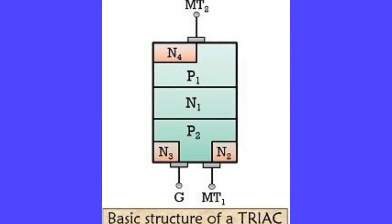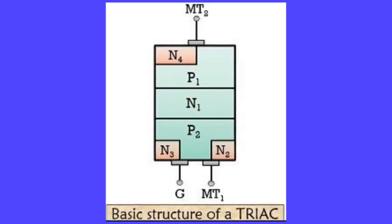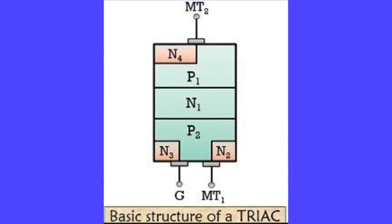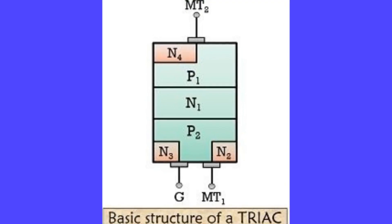In Mode 2, when MT2 is positive and the gate terminal is negative with respect to MT1, gate current flows through the P2-N4 junction. This gate current forward biases the P2-N4 junction for the auxiliary P1-N1-P2-N4 structure. This results in the TRIAC conducting initially through the P1-N1-P2-N4 layers.